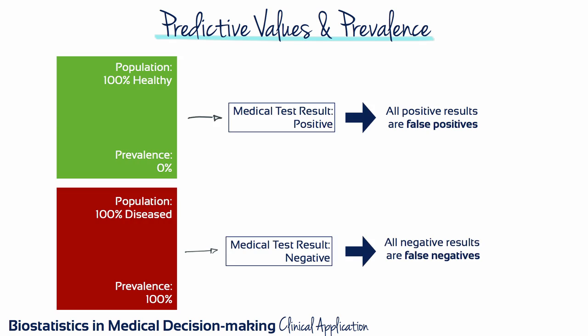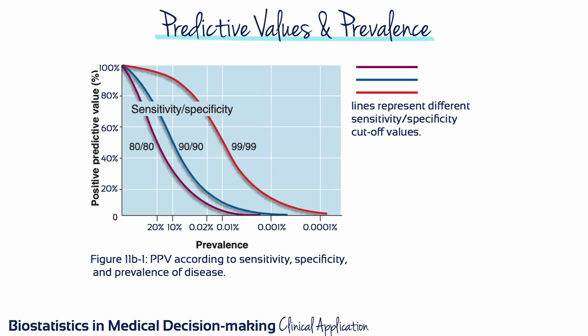This figure illustrates the effect of prevalence on positive predictive value for a test at different, but generally high levels of sensitivity and specificity. When the prevalence of the disease in the population tested is relatively high, the test performs well. But at lower prevalences, the positive predictive value drops to nearly zero and the test is virtually useless. Notice that as sensitivity and specificity fall, the influence of prevalence on predictive value becomes more pronounced.